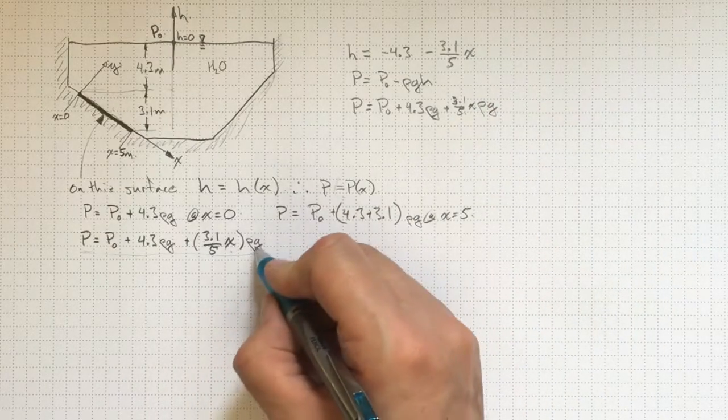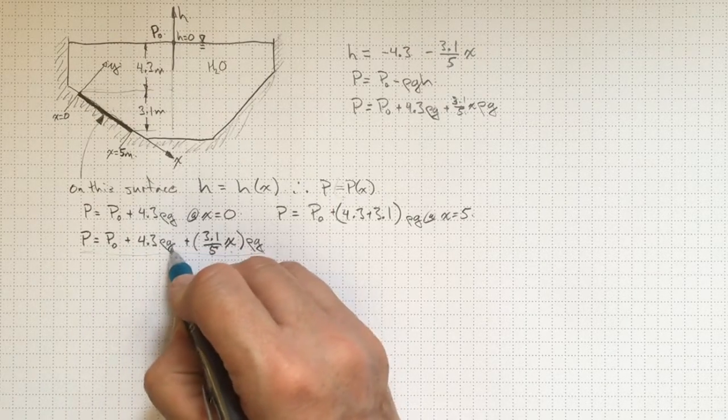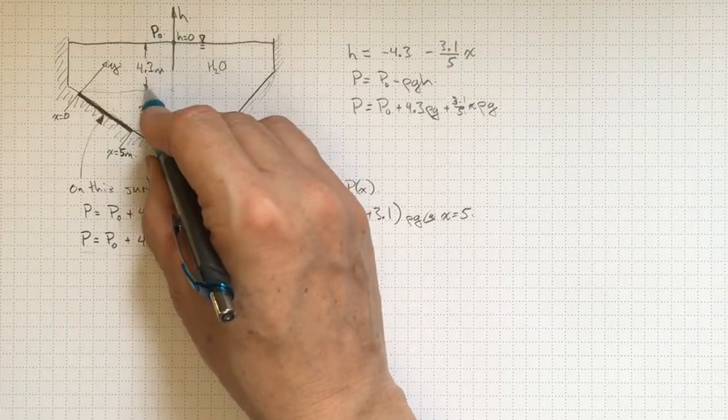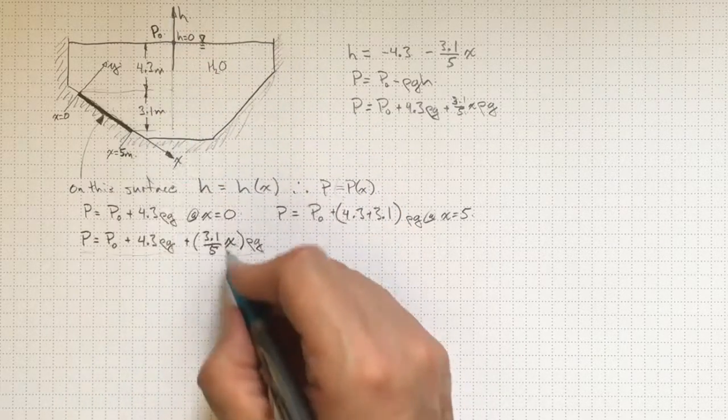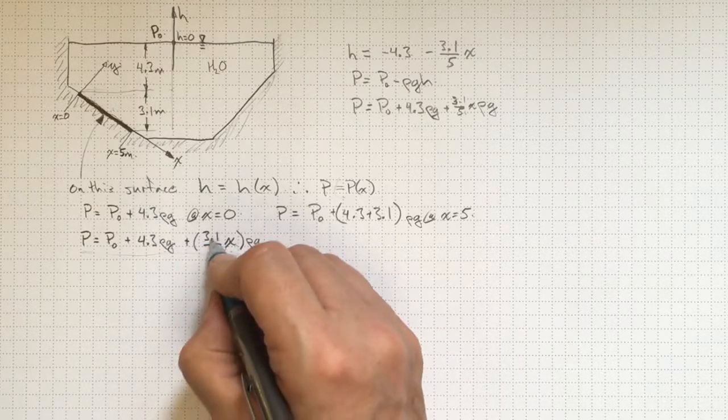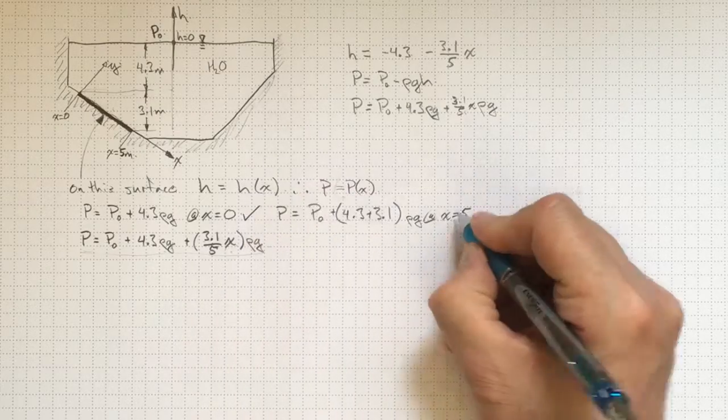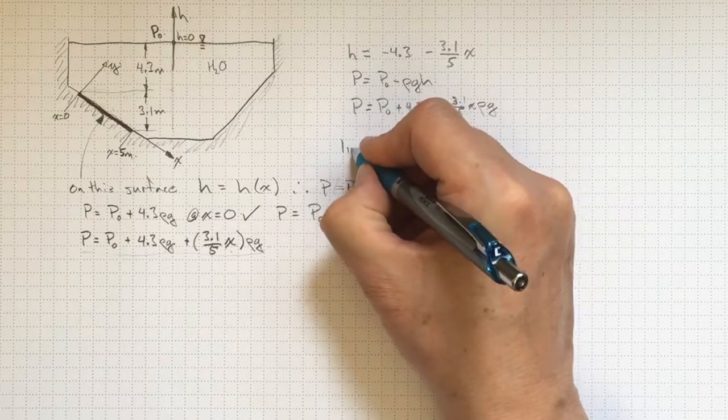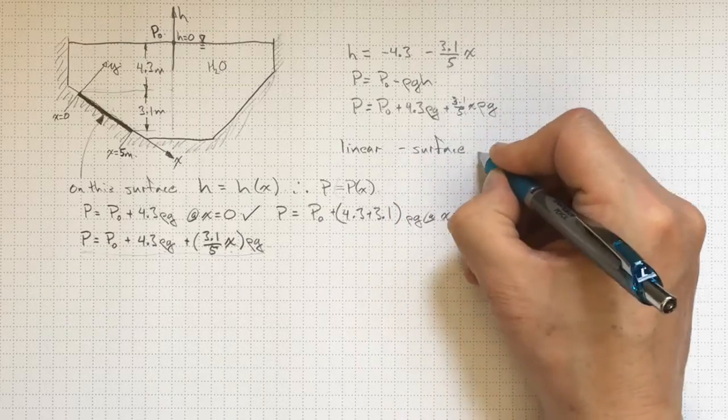And let's check it and make sure that it works out. When x is equal to zero, p-naught plus 4.3 rho g checks at that point. When x is equal to five, five and five cancel out 4.3 plus 3.1 times rho g. So that one checks. And the relationship is linear because the surface is flat. So that works.